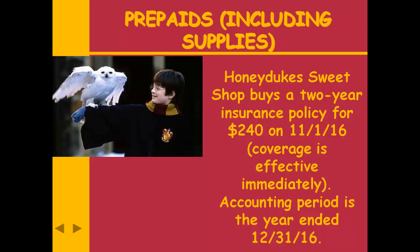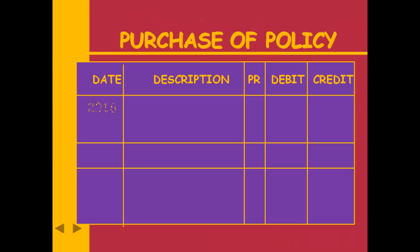Another example: we buy a two-year insurance policy for $240 on November 1st. Coverage begins immediately; the accounting period ends December 31st. On November 1st, we debit prepaid insurance — not insurance expense — because by December 31st we will not have used all of it up. Therefore, we have more of the asset: prepaid insurance.